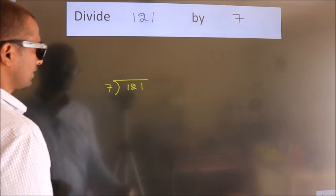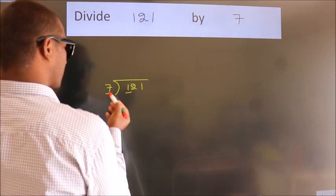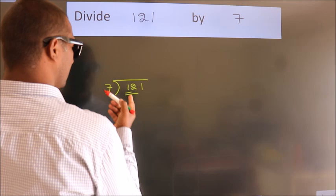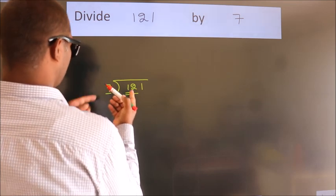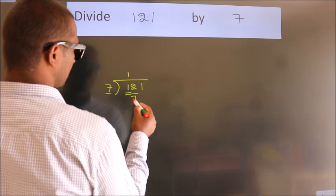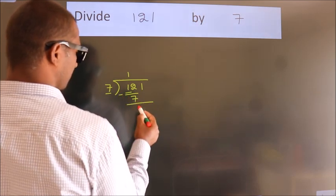Next, here we have 1, here 7. 1 is smaller than 7, so we should take 2 numbers, 12. A number close to 12 in 7 table is 7 once 7. Now, we should subtract. We get 5.